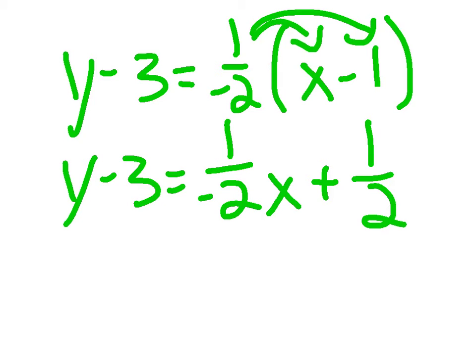Now you're going to add 3 to both sides. We're going to convert the 3 into a fraction over 2. So we do 3 times 2, which equals 6.